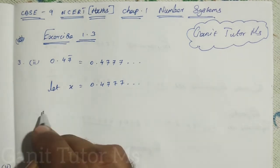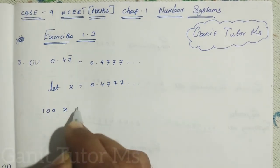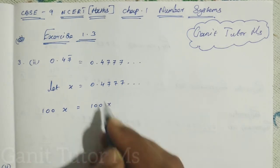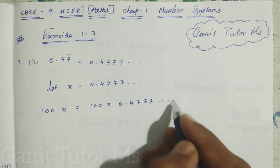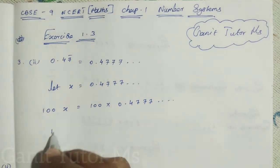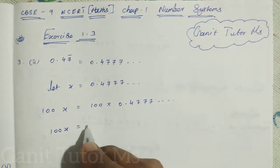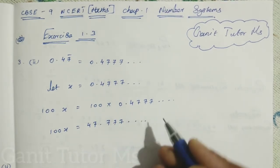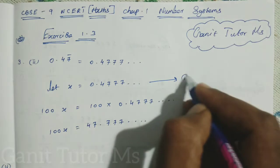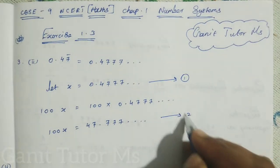So I want to multiply 100 on both sides. So 100 into X, here also 100 into the decimal expansion, 0.47777, etc. Next, 100X is equal to, when you are multiplying these two, we can get 47.777, etc. You just mark the X value as equation number 1, this one as equation number 2.